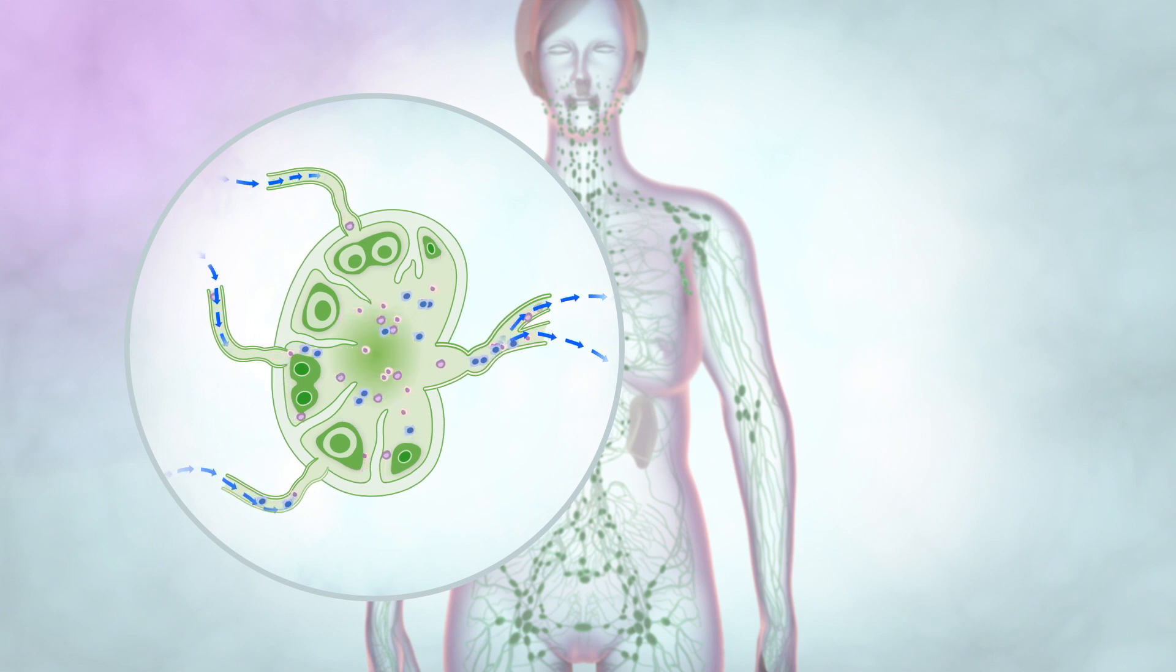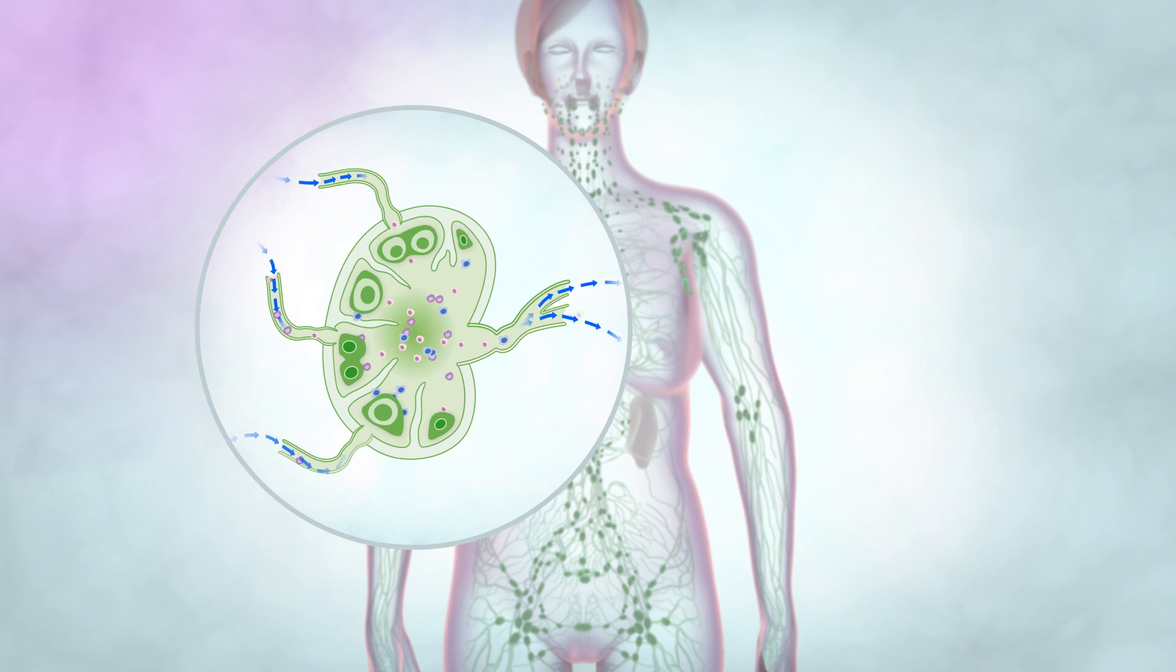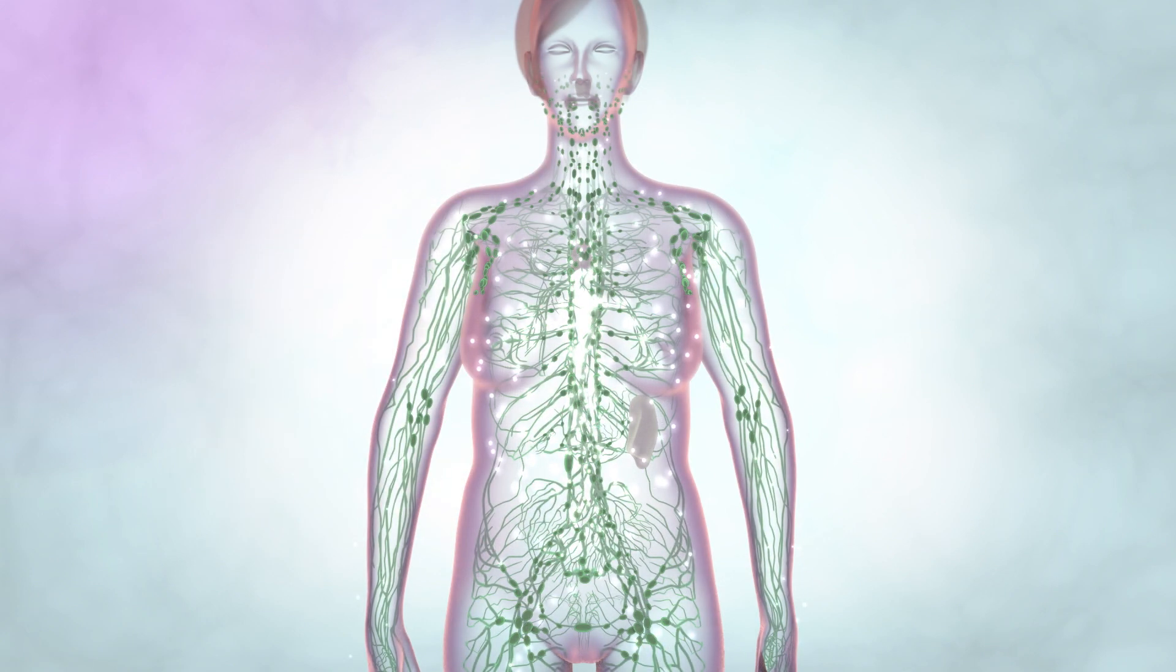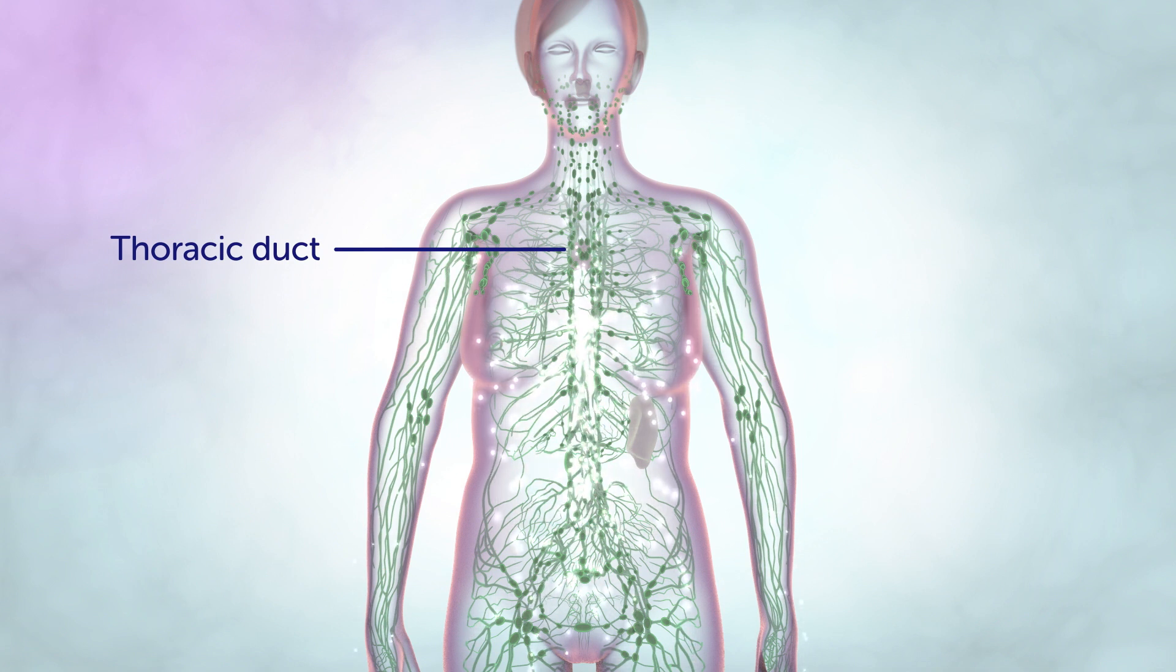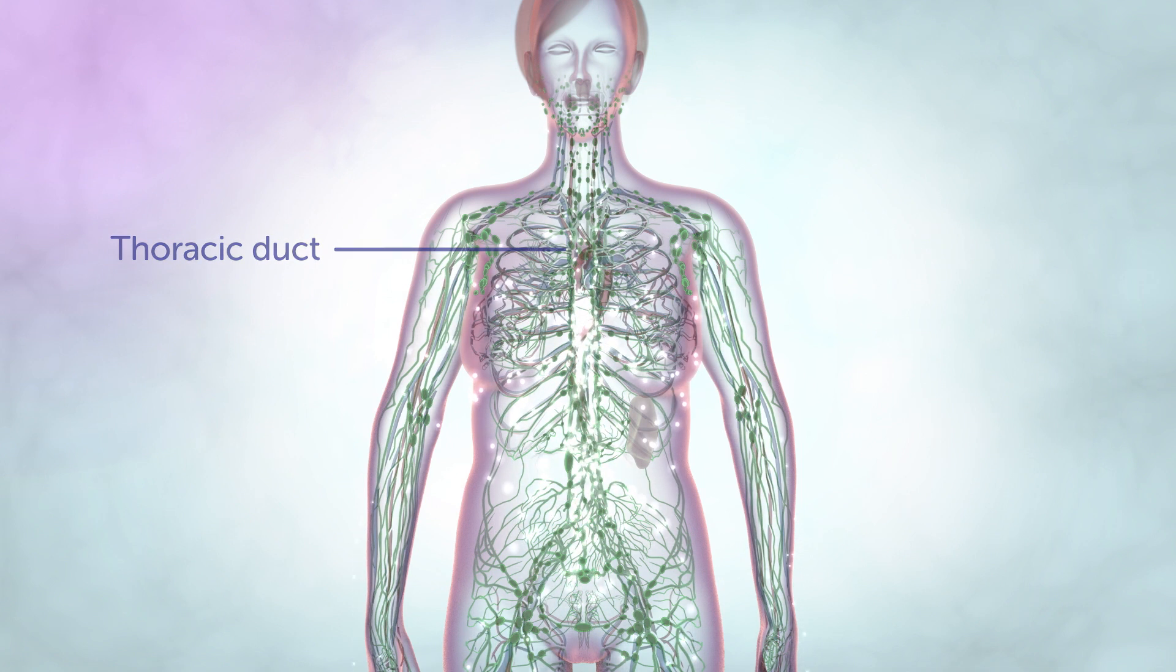The lymph also contains lots of white blood cells, called lymphocytes, which help us fight infections. The lymph eventually reaches a large vessel at the base of the neck, called the thoracic duct, which passes the filtered lymph back into the blood circulation.